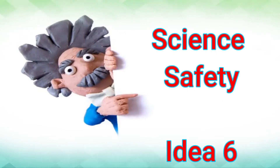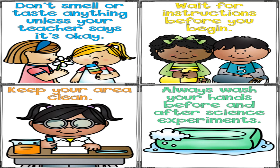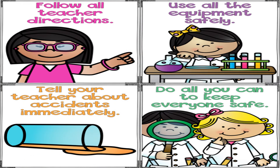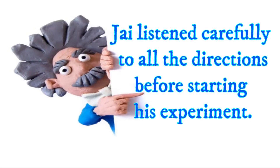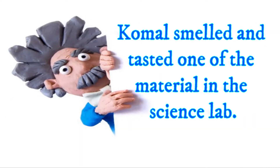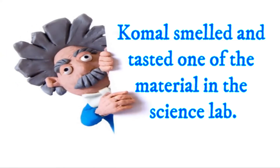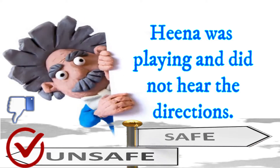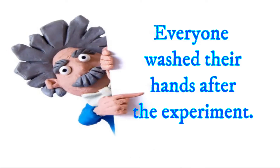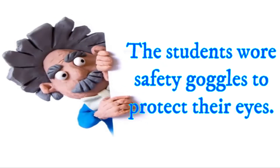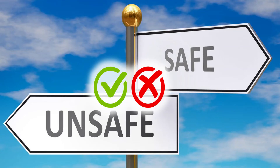Idea number six is science safety. While performing science experiments, there are various safety measures that need to be followed. In this activity, teachers can give some instances and ask students: is it safe or unsafe? For example — Jay listened carefully to all the directions before starting his experiment: safe or unsafe? Komal smelled and tasted one of the materials in the science lab: safe or unsafe? Hina was playing and did not hear the directions: safe or unsafe? Everyone washed their hands after the experiment: safe or unsafe? The students wore safety goggles to protect their eyes: safe or unsafe? I hope you also find this interesting.